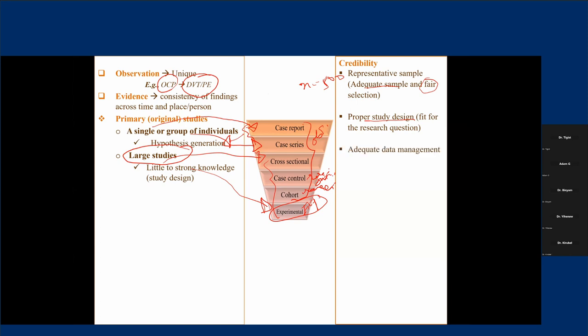The third factor is data management, which is usually overlooked. Unless we manage our data properly, we end up comparing variables that should not be compared, leading to an obviously exaggerated association between our exposure and outcome. Data management is something we must do, and there are different components of data management which you can further read on.